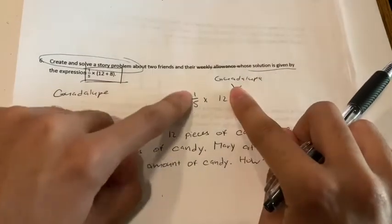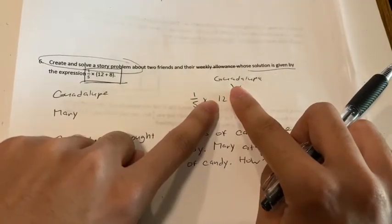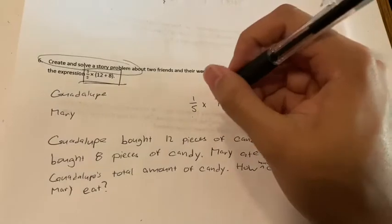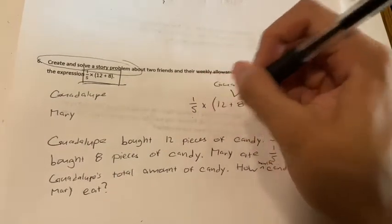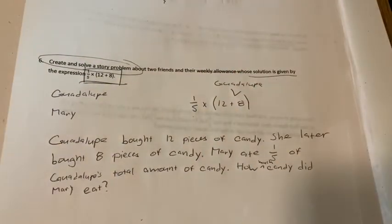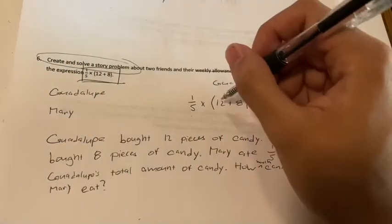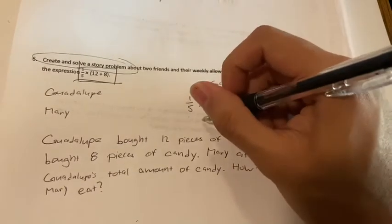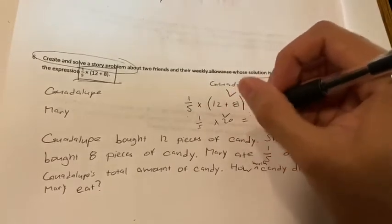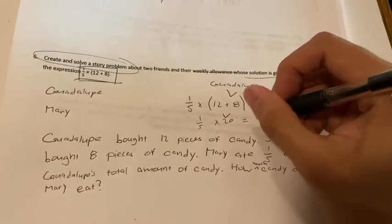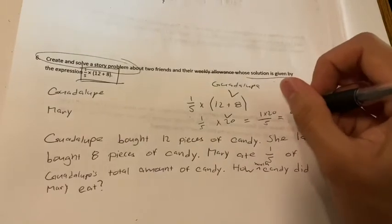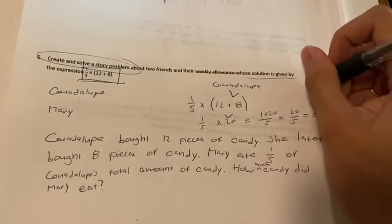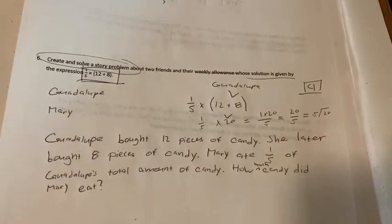So one-fifth times her total. But remember, if I just have my equation like this, then that's saying that she ate a fifth of only the 12. Because at this point, we're kind of just multiplying one-fifth times 12. But that's not the case because Mary ate the total amount of Guadalupe. So that means we have to add some parentheses here. The parentheses tell you what you need to do first. So now we know that we have to add the 12 plus 8 first. 12 plus 8, that is 20. And now we can go ahead and multiply one-fifth times 20. I have 1 times 20 over 5. That's going to give me 20 over 5. So that's like saying 5 divided by 20. And I know my answer is 4 because 5 goes into 20 four times.